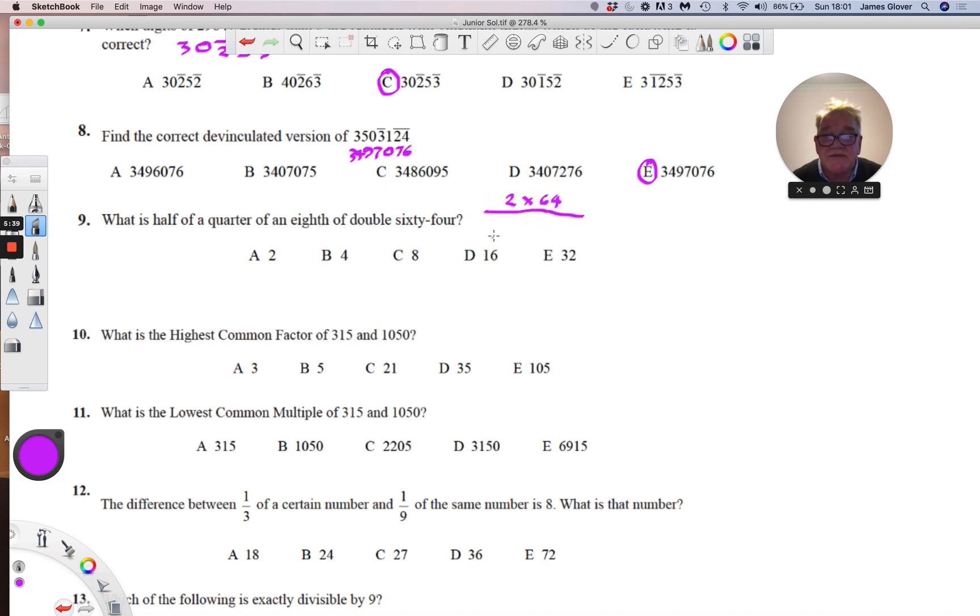And we want an eighth of this, so we are going to divide by 8. We want a quarter of that, so we divide by 4. And then we want a half of that, so we divide by 2. And if we cancel down using proportionately, we will have 64 divided by 32, which is 2.